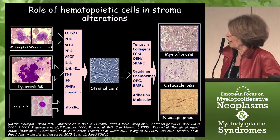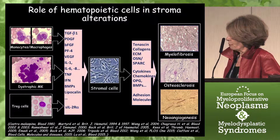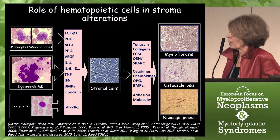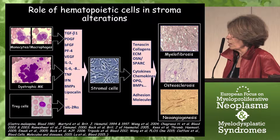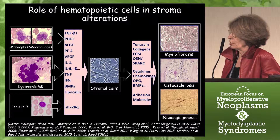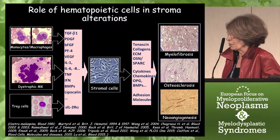Several groups have demonstrated that in myelofibrosis, the stromal alteration — that is the myelofibrosis, osteosclerosis, and neoangiogenesis — results from an increased deposit of extracellular matrix components, cytokines, chemokines, and alteration of adhesion molecules produced by activated stromal cells. Those stromal cells are activated by a cytokine storm produced by cells from the hematopoietic clone, especially dystrophic megakaryocytes, but also monocyte-macrophages and immune regulatory cells.